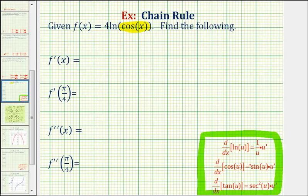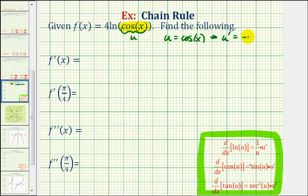Going back to f of x, since cosine x is the inner function, we'll let u equal cosine x. So if u is equal to cosine x, we'll find u prime — the derivative of u with respect to x — which would be negative sine x. That means f prime of x would be equal to the derivative of four natural log u, which equals four times one over u times u prime.